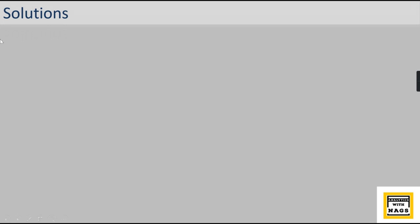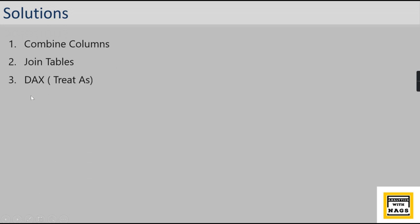Let's look at the solutions available. Basically, you can combine the columns — combine both columns and then create a relationship. This is one quick solution. Or you can join the tables and bring whatever is required into a single table. These are two suggestions. For larger models there is also another quick workaround: using a DAX function called TREATAS — without creating any relationship — you can use the TREATAS DAX function to achieve this.